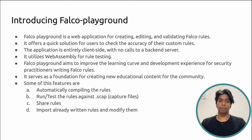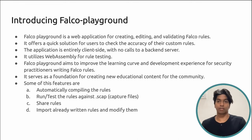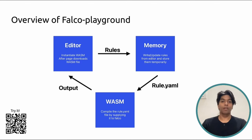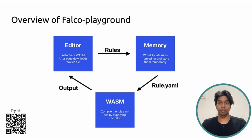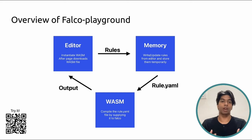With Falco Playground you can edit, create, import, and update your Falco rules, providing a quick, seamless way to validate Falco rules without the overhead of installing Falco itself. The working of Falco Playground can be simplified into three components: the editor component, the memory component, and the Wasm module component. The editor is a client-side application where you write your Falco rules. The rules are written as a YAML file and stored in memory, then fed to the Wasm module loaded in the browser, which validates the rule file and provides the output.